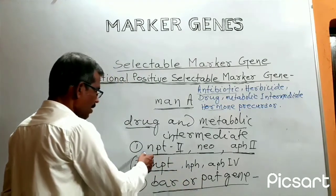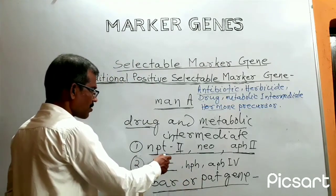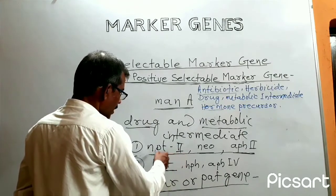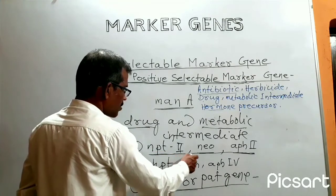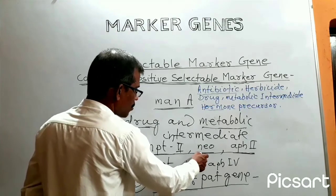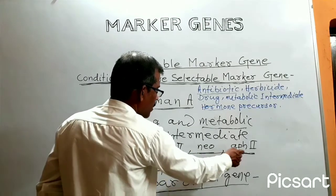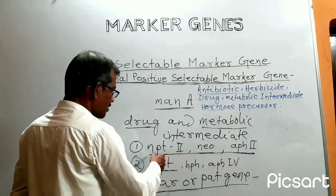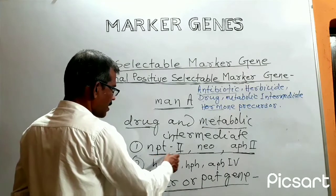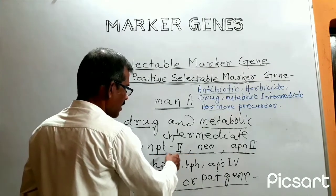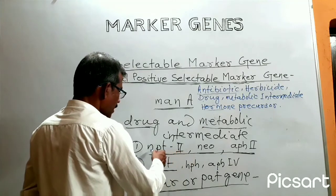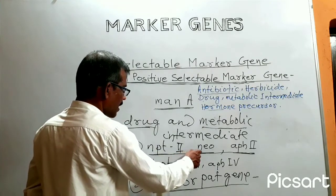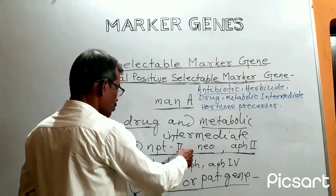One of the widely used gene systems is NPT2. The NPT2 gene system is also known as NEO or APS2. This gene system provides resistance to the antibiotics neomycin and kanamycin, and codes for the enzyme neomycin phosphotransferase.